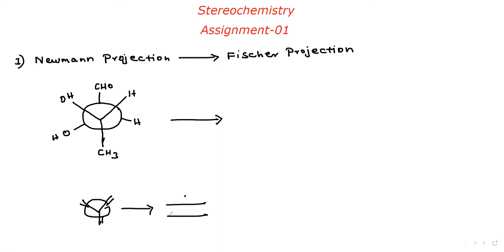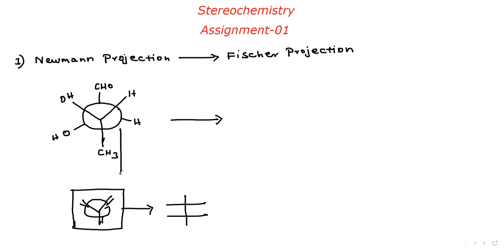Whenever they give a different Newman projection, our rule is: we first have to convert it to this standard type of Newman projection, then convert to Fischer. So what are we going to do now? I'm going to change this Newman to the standard Newman form. How? I do a 180° rotation.